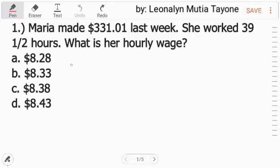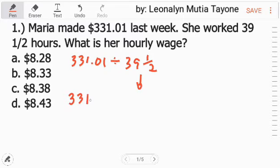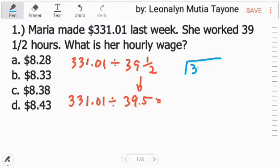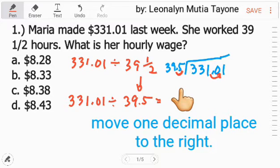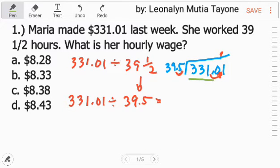Mag-divide lang tayo. So, 331.01 divided by 39 and one half. Para mas madali, i-convert natin into decimal. 331.01 divided by 39.5. Let's go step by step in dividing these decimal numbers. 331.01 divided by 39.5. Now, we can divide.